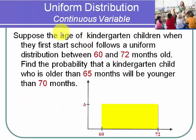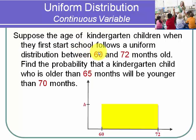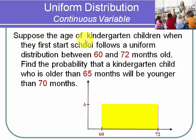Let's look at another example with kindergarteners. There's a rule that when you start kindergarten, you have to be between five and six years old. Suppose that the age of a kindergarten child when they first start school follows a uniform distribution between 60 and 72 months — where 60 months is five years old and 72 months is six years old. We're going to suppose all months and days are equally likely, so it really is a uniform distribution.